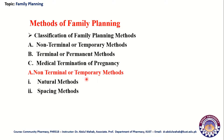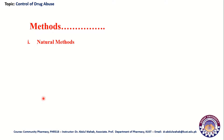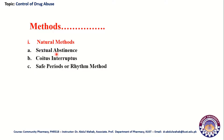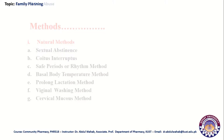These two methods are further divided into subtypes. Under natural methods, the subtypes are: sexual abstinence, coitus interruptus, safe periods or rhythm method, basal body temperature method, prolonged lactation method, vaginal washing method, and cervical mucus method. These are the subtypes of natural methods.